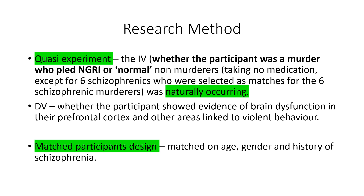This study was a quasi-experiment, and the independent variable — whether the participant was a murderer who pled NGRI or was a normal non-murderer — was naturally occurring. It's important to note that no one took any medication in this study, apart from six schizophrenics who were selected as matches for the six schizophrenic murderers. The dependent variable was whether the participant showed evidence of brain dysfunction in their prefrontal cortex and other areas previously linked to violent behaviour.